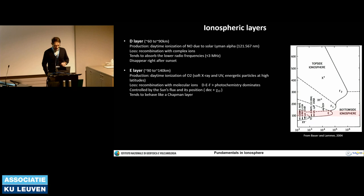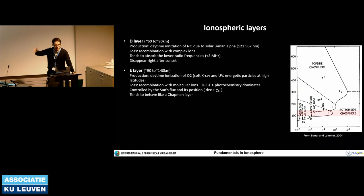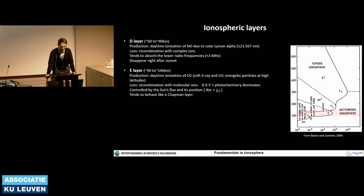The E layer ranges from about 90 to 140–150 km. The production mechanism is the daytime ionization of O₂ and particle precipitation in the high-latitude sector — with particle precipitation maximizing at about 150 km. Loss is through recombination in molecular ions. The E layer is strongly driven by the solar zenith angle, and it actually behaves quite nicely as a Chapman layer.